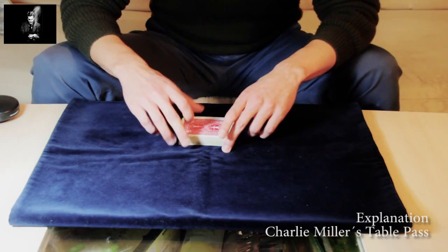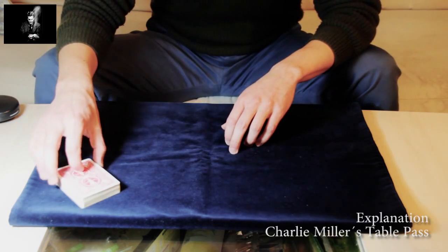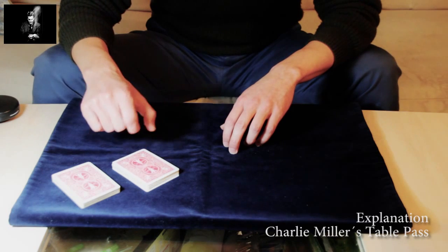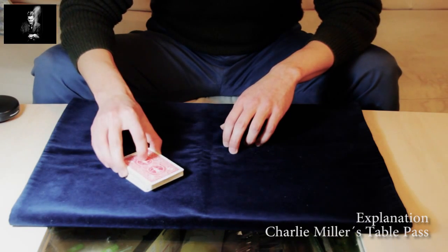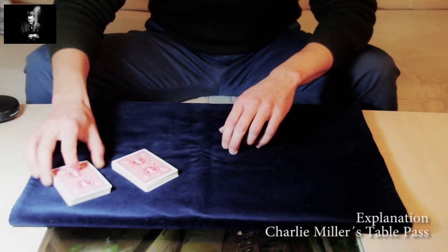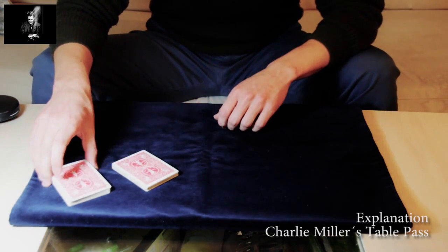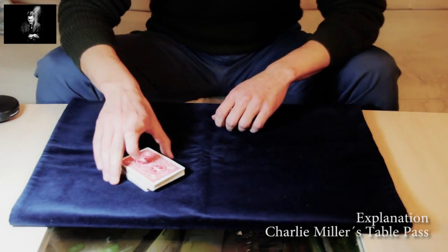So what's happening actually? When you cut, this is the original top half and the bottom half goes on top of the deck, but it's not squared up. It's a little bit outjogged like this, you see?